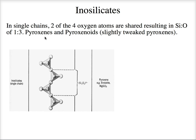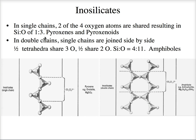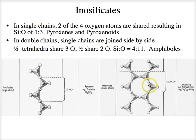In the double chains, we link those single chains side by side. Half of our tetrahedra are sharing three oxygens — one, two, three shared — whereas the other half only share two, like we saw in the single chains. When you work out the ratio, it comes out to four to eleven, and that's going to be the amphibole group.